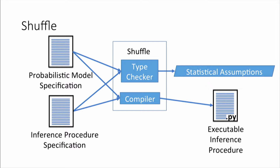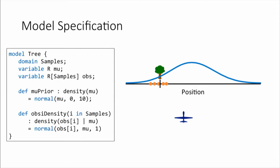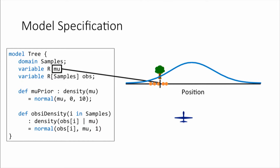Let's start with the model. The first thing I do in a Shuffle model is define a domain — a named finite subset of the natural numbers used for quantification. Next, I define the random variables: mu, the true location of the tree, is a real number; and obs is a vector of real numbers of size 'samples', where each element represents an observation.